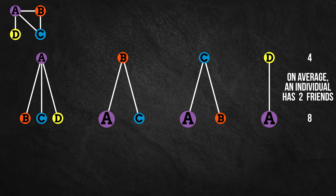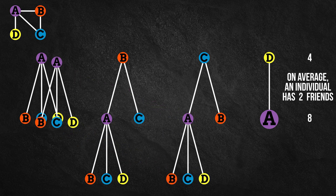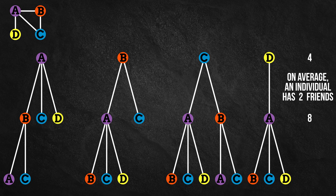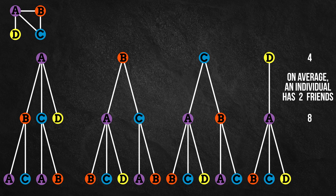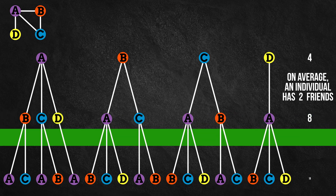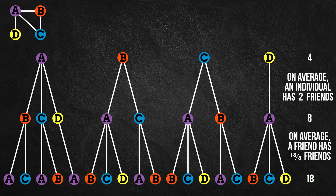Now let's take this one level deeper. Alice is a friend of three individuals, so we'll put her friends list below each of those instances. Bob is a friend of two individuals, so we'll put his friends list below each of those instances. Carol is also a friend of two individuals, and Dan is a friend of one individual. So the four individuals have a combined total of eight friends, who have a combined total of 18 friends. On average, an individual's friend has 18 divided by eight — on average, 2.25 friends.